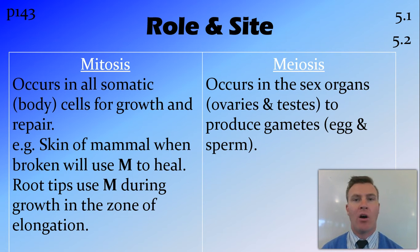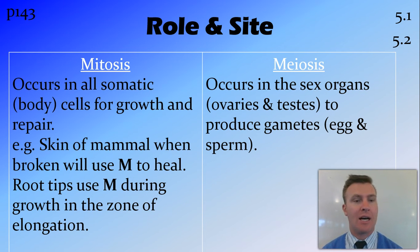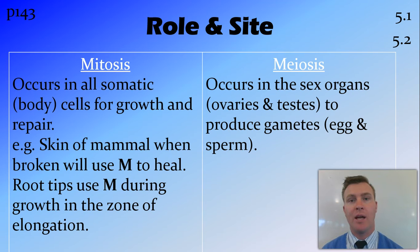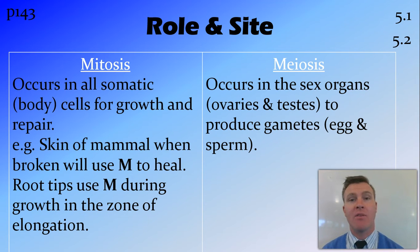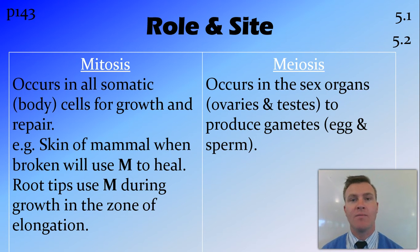Ideally I would have a third column on the left-hand side with things like role and site, but it didn't fit well on the page. Firstly, with the role and site: mitosis occurs in all cells in the body and is used for growth and repair. An example of repair would be in the skin of a mammal — when you fall off your skateboard and graze your knee, mitosis occurs within those skin cells where more skin cells grow and heal that site.